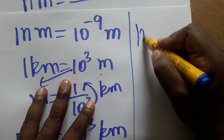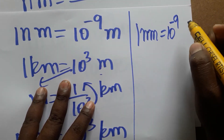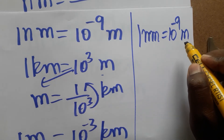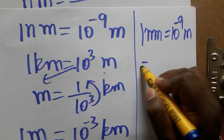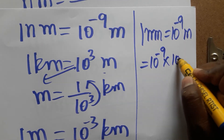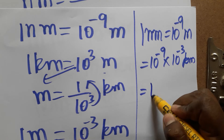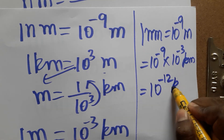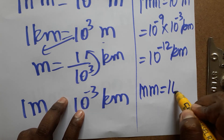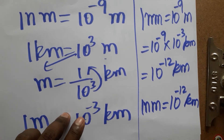Now, one nanometer equals 10 power minus 9 meters, and one meter is equal to 10 power minus 3 kilometers. So we get 10 power minus 9 multiplied by 10 power minus 3, which gives us 10 power minus 12 kilometers. Therefore, one nanometer is equal to 10 power minus 12 kilometers.